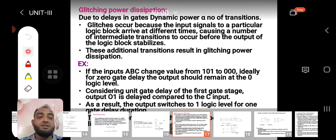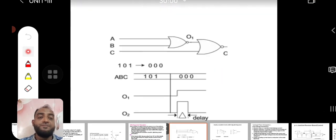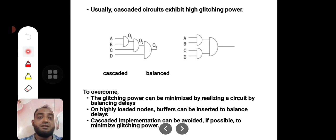Usually cascaded circuits exhibit high glitching power. Cascading means the output of one circuit is given as input to the other circuit and so on. In this circuit, even if you apply the inputs at a particular instant of time...